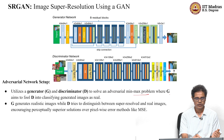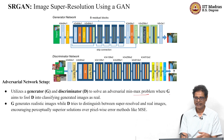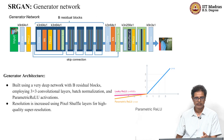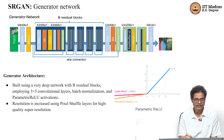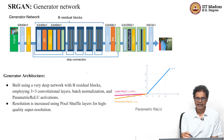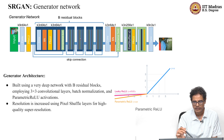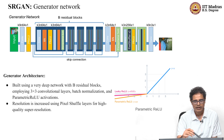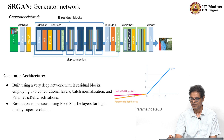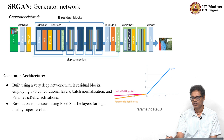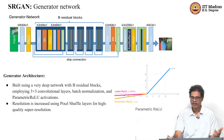The generator architecture is a very deep network with B residual blocks. Each residual block contains convolution, batch normalization, and parametric ReLU layers. Parametric ReLU: for standard ReLU, anything positive passes as-is, and anything negative is clipped to zero.